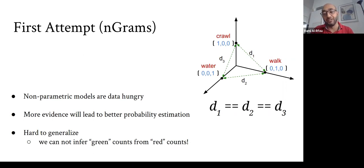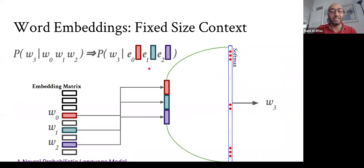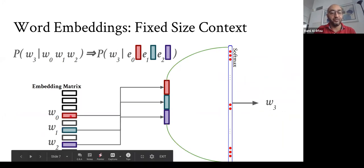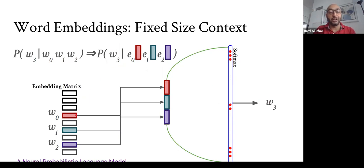The fix is to embed words — instead of each having its own dimension, project them to a lower-dimensional space of 50 to 500 dimensions. We call these word embeddings. To predict W3, we replace each word with its embedding vector E0, E1, E2, concatenate them, and feed to a DNN network that predicts the fourth word. This proved quite successful.